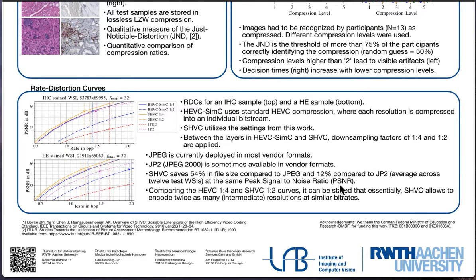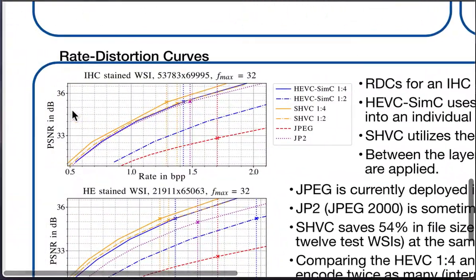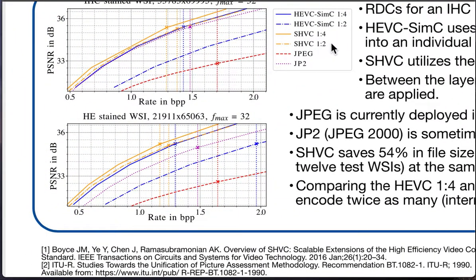This is achieved at about the same PSNR values. Another way to state this is that if we look at different downsampling factors — for example, factors of 4 or 2 — with the scalable version we basically get the intermediate layers from the more dense downsampling for free. Looking at the rate-distortion curves, the SHVC 1-over-2 and the HEVC simulcast 1-over-4 curves closely align.